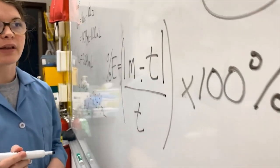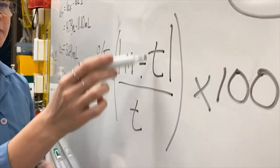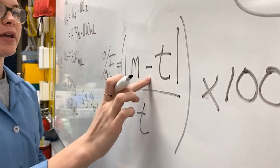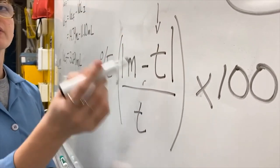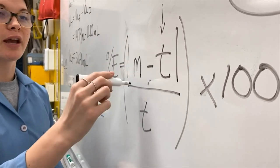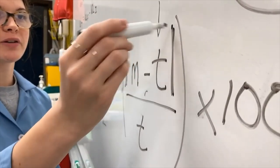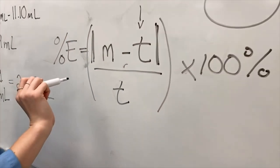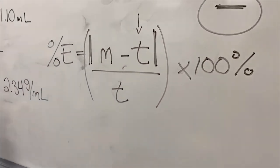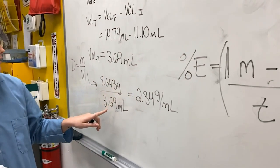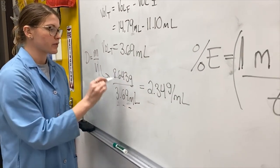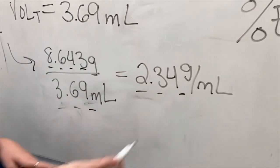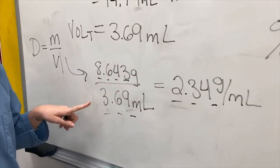One thing to note — it'll likely happen in this experiment: if your theoretical value is larger than your measured, you're going to get a negative symbol. That's why we have the absolute value bars, so even if you get a negative, it's going to be positive ultimately. Make sure you're also following your significant figures. We had three significant figures and four significant figures, so we're going to round to three when dividing. Just make sure you keep track of your significant figures throughout.